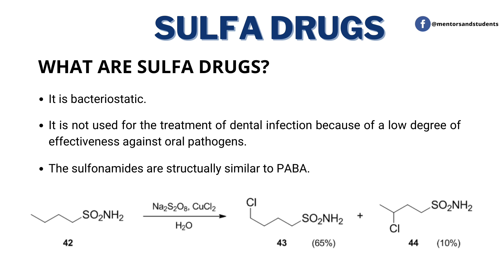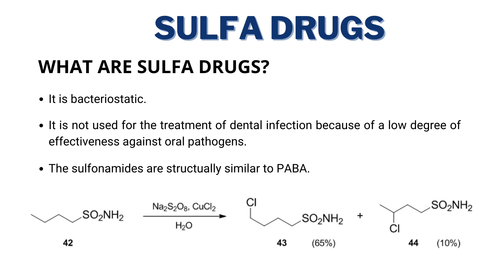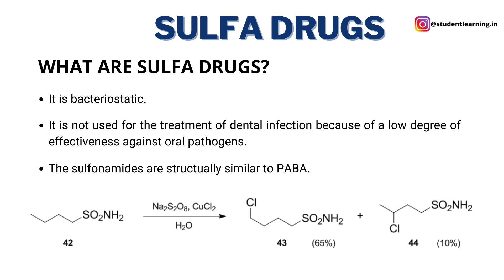Humans obtain folic acid from their diet, but bacteria need to synthesize it. Sulfonamide antimicrobials may be combined with trimethoprim to make them bactericidal, that is, to kill bacteria, because trimethoprim acts on a different enzyme in the folic acid synthesis pathway. Sulfonamides are not used for the treatment of dental infections because of a low degree of effectiveness against oral pathogens. The sulfonamides are structurally similar to PABA.